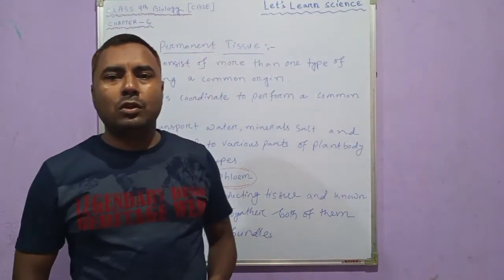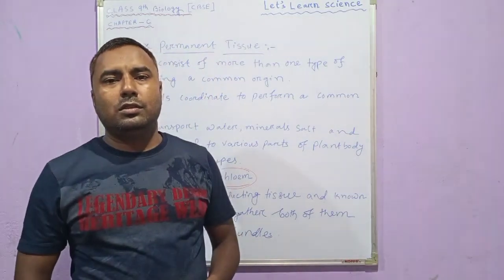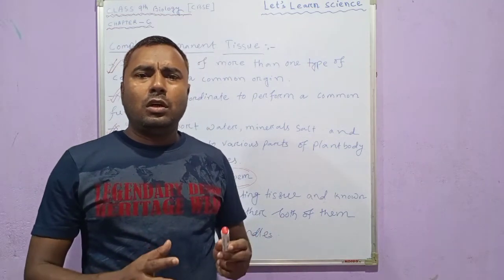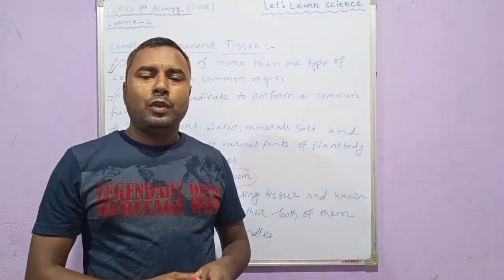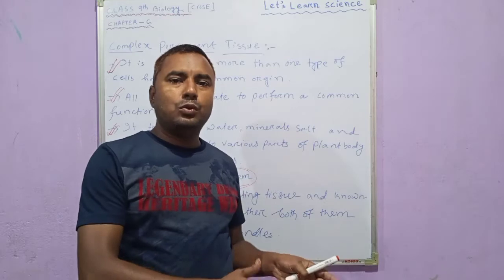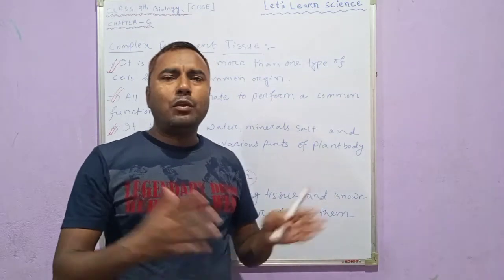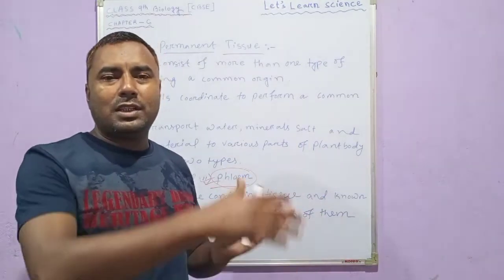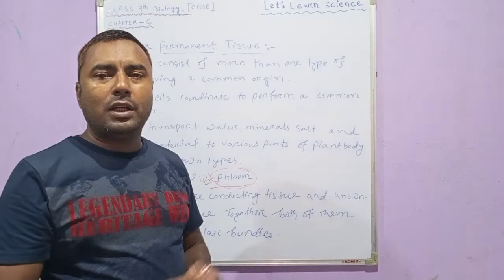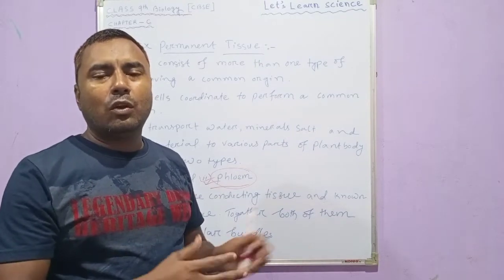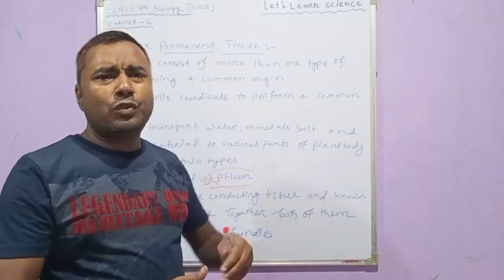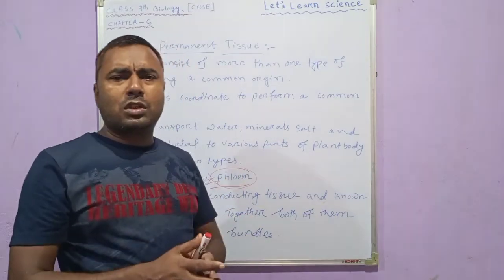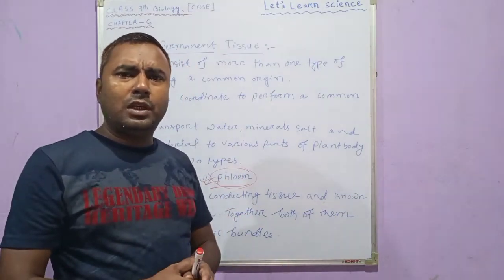Hello students, you are welcome back to your own channel. Let's learn science. Today in this session we will talk about the complex permanent tissue. Already we have learned about meristematic tissue and its various types, then simple permanent tissue and its various types — parenchyma, collenchyma, sclerenchyma — their functions and location in the plant body. If you have not watched that video, it is available in the playlist.